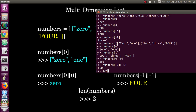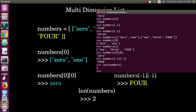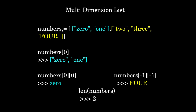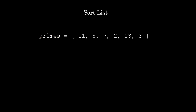You can also use the len() function. If I give len(numbers), it will tell you the length of the list. Since the numbers list has two sub-lists, the length is 2. We will see in the next video how to sort the list. Thank you.